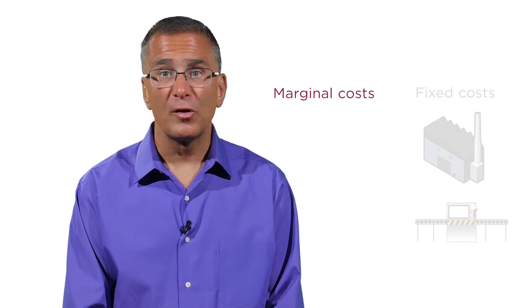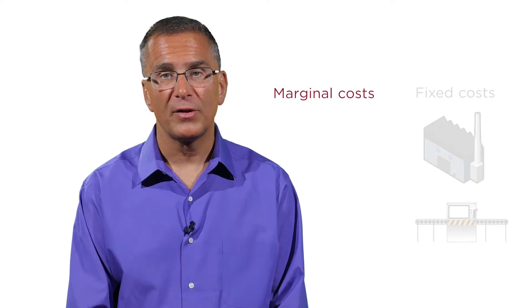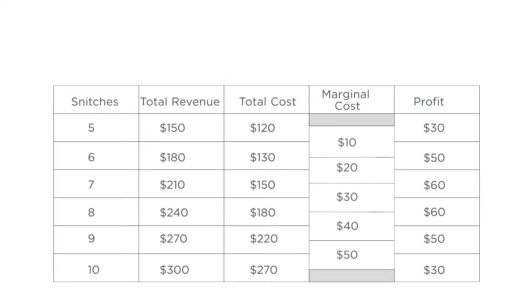So even if the firm sells a bunch of units until marginal cost equals price, it may still have negative profits. Imagine if the fixed cost for the snitch factory was back to $200 instead of $100, and all else is the same.